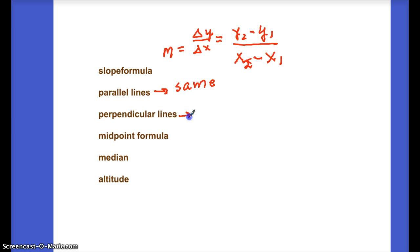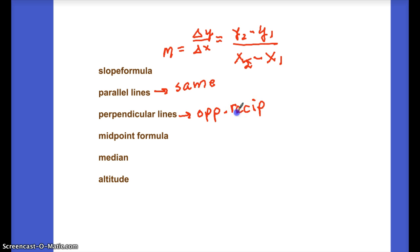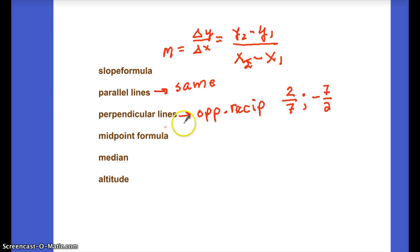For example, if one line has a slope of two-sevenths, then a line perpendicular to it will have a slope of negative seven-halves.